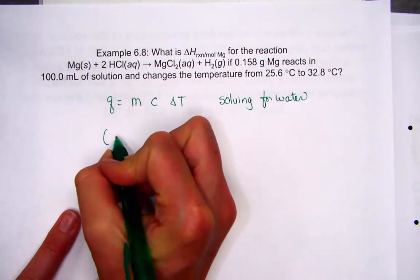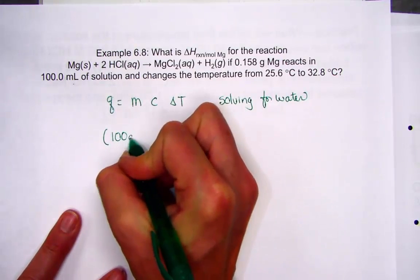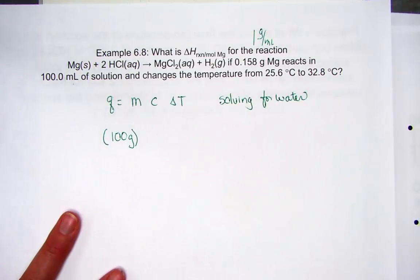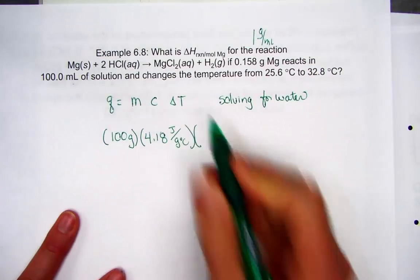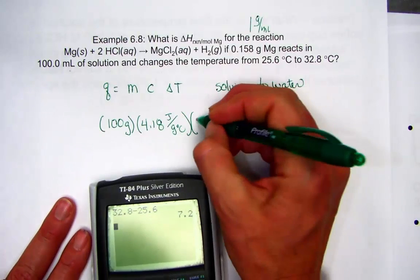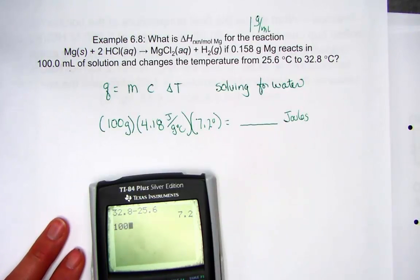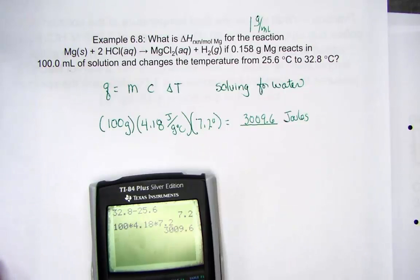The water is absorbing the heat energy as this reaction proceeds. The mass of the water is 100 milliliters — since the density of water is 1 gram per mL, that converts directly to 100 grams. The specific heat constant for water is 4.18 joules per gram per degree Celsius. The temperature difference is 32.8 minus 25.6, which is 7.2 degrees. So 100 × 4.18 × 7.2 = 3009.6 joules of energy absorbed by the water.